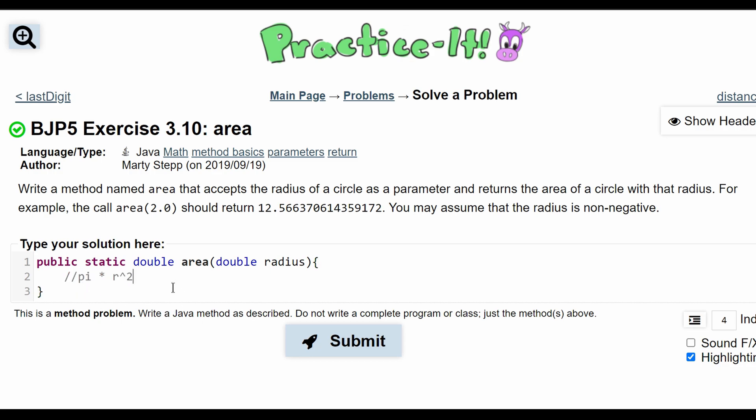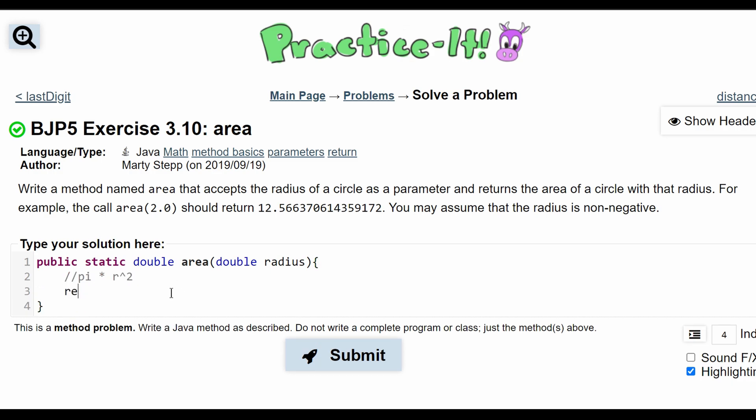So in our code, we are going to need to return pi, which is Math.PI, times Math.pow, and then we have radius, and then 2.